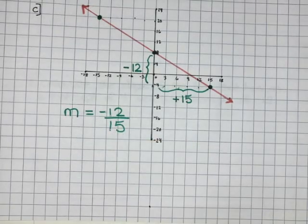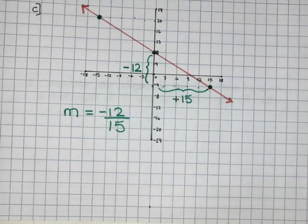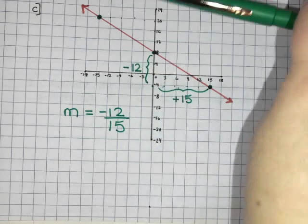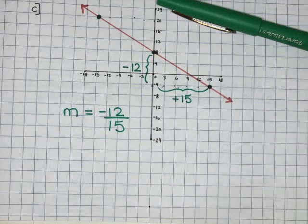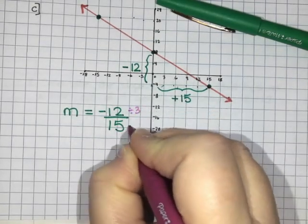Now this one I can actually reduce this fraction and that's the first time we've ever been able to do that. So 12 and 15 both divide by the number 3. So I could reduce this fraction by 3.